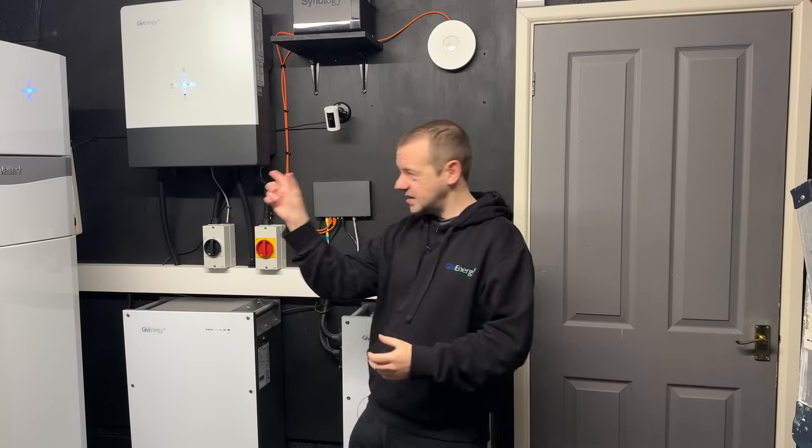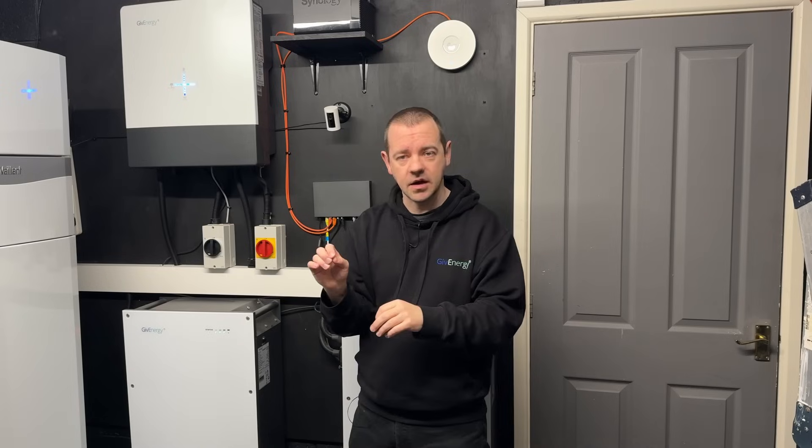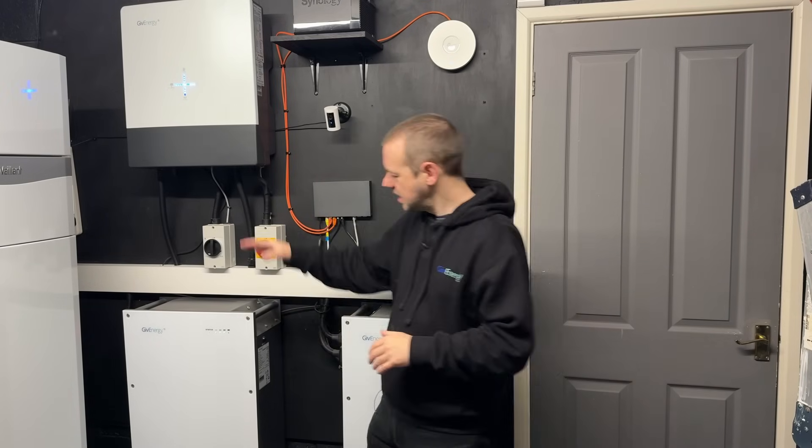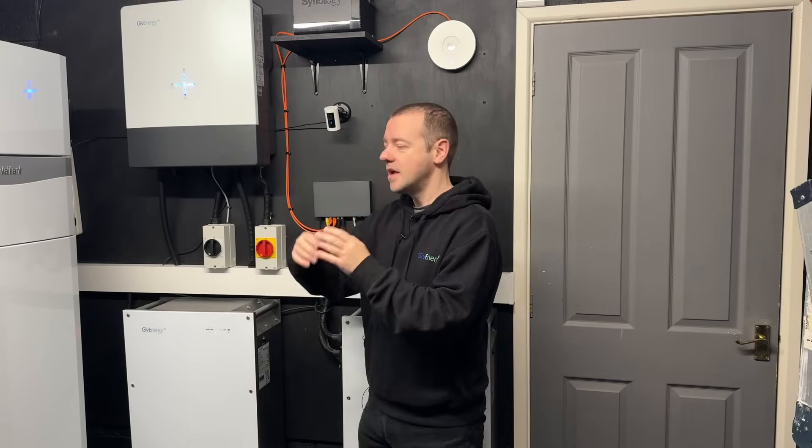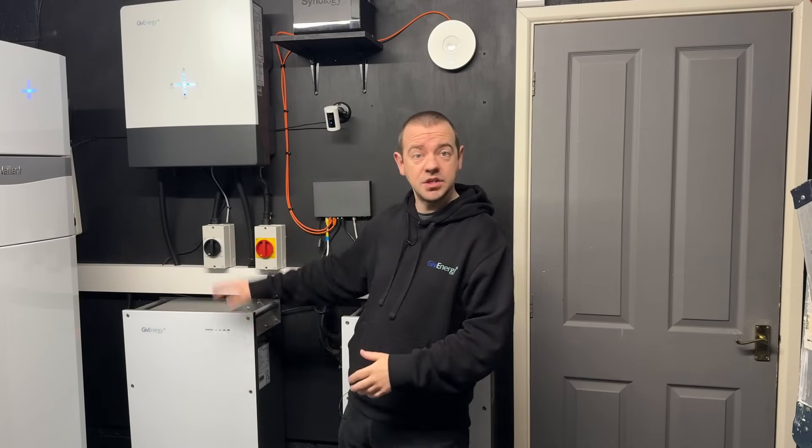So this is what a time of day tariff is. There's a cheap rate, typically at night, and then the rest of the day is probably a bit more expensive than a standard flat rate tariff. So to avoid paying the more expensive peak rate, you charge your battery up using that cheap electric that powers the house, and then the cheap rate comes around again and you charge it back up.